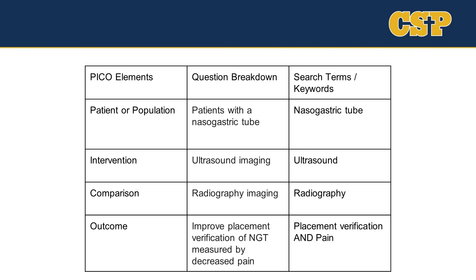Now we break down our PICO question into search terms or keywords. To search for the patients we are identifying in this PICO, we would search the term 'Nasogastric tube.' For our intervention, we can look at 'ultrasound.' Our comparison will be 'radiography.' And for our outcome, we'll want to look for things that include both tube placement verification and pain as our measured outcome.